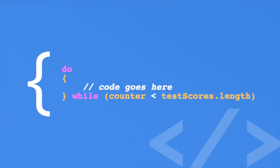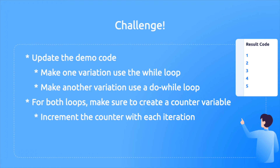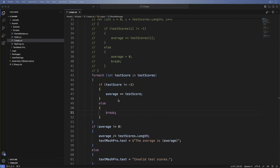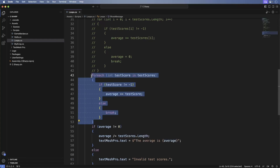Now for the challenge — here comes your task. I want you to update the code to use the while loop and then the do while loop. This is going to be a bit challenging, but you have the skills at this point to work through the issue. Remember, you must create a counter variable and increment with each loop iteration. Give it a shot and it's okay to make mistakes.